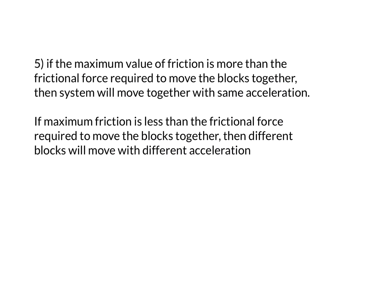Now the conclusion: if the maximum possible value of friction is greater than the frictional force required to move the blocks together, then the system will move together with the same acceleration. If the maximum friction is less than the required friction, the blocks will move with different accelerations. We will understand this through numerical examples.